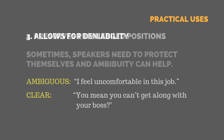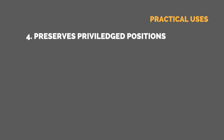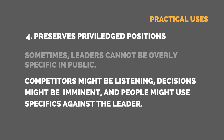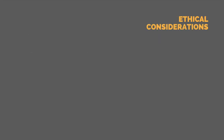Strategic ambiguity also preserves privileged positions. Sometimes leaders cannot be overly specific in public — competitors might be listening, decisions might be imminent and can't be discussed yet, or other people might use those specifics against the leader in the future. So sometimes leaders have to use ambiguous statements to protect against that.